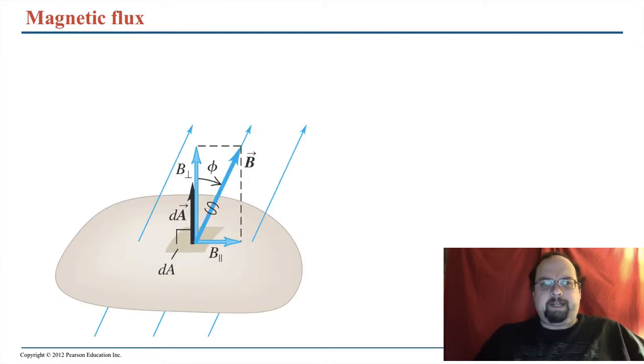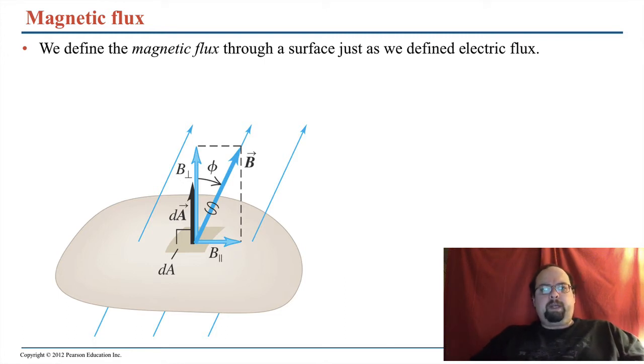But first let's talk flux again. Flux, cool word. So we're going to define magnetic flux through a surface in just the same way that we defined electric flux. There are field lines. They're not actually moving, but they are pointing sort of everywhere. Or everywhere in space you have a magnetic field that is pointing in some direction with some magnitude. Possibly zero though, so I guess that statement's not true.